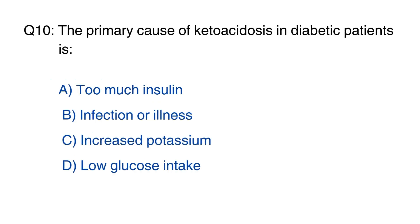Question number 10: The primary cause of ketoacidosis in a diabetic patient is? The right option is B, infection or illness.